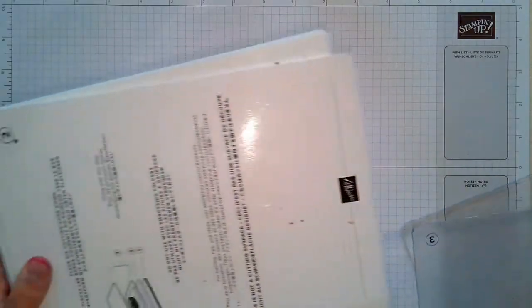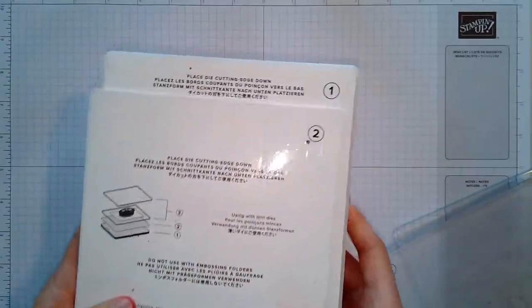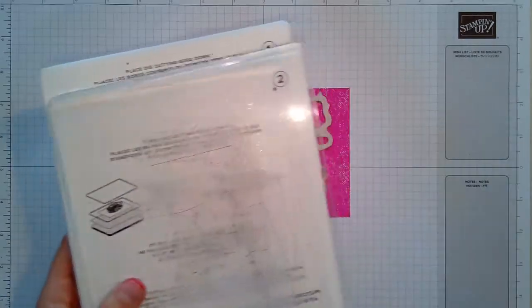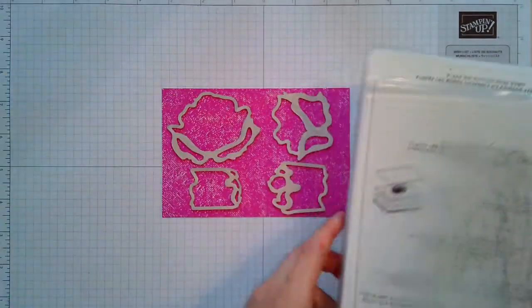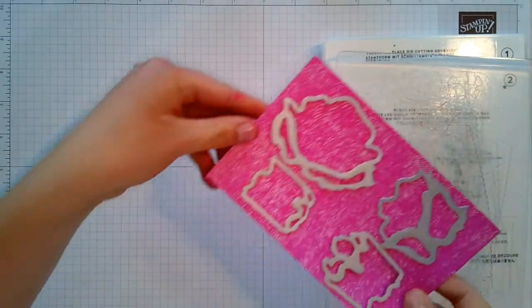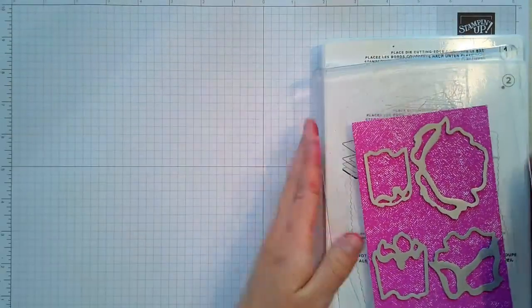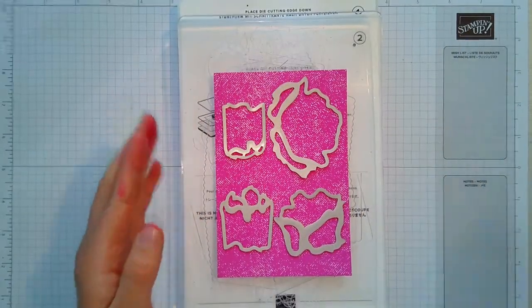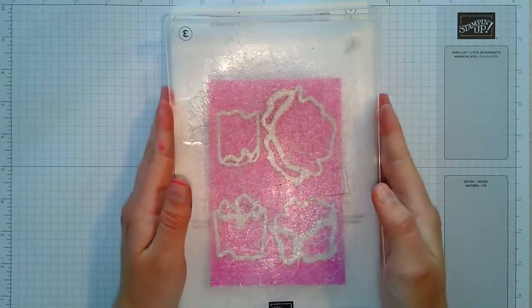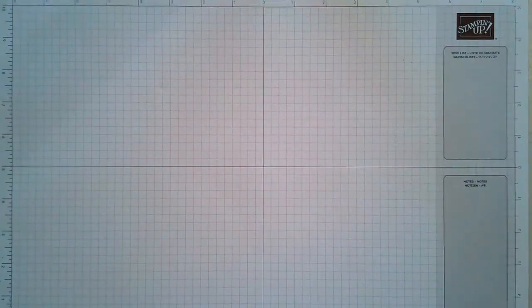So you'll grab your big shot platform here. You'll need the one, two, and number three plexiglass plates, and then we will put the piece with our dies on here, and then you'll need the third plexiglass piece on top and you will run this through the big shot.